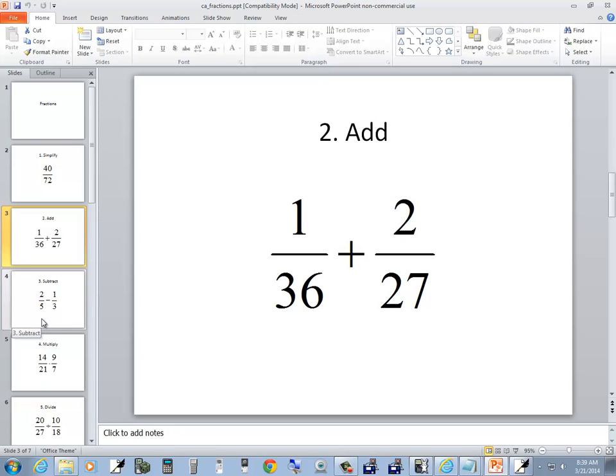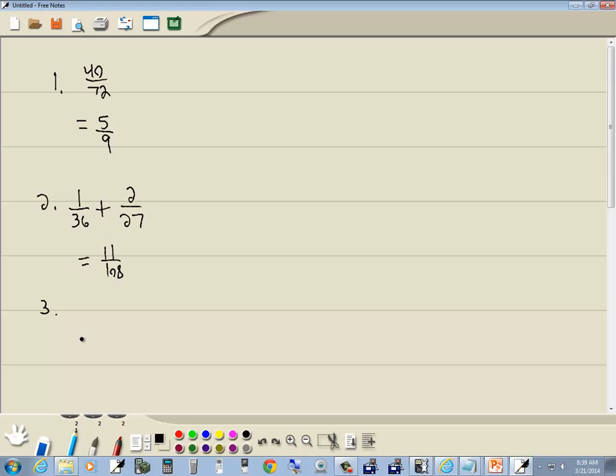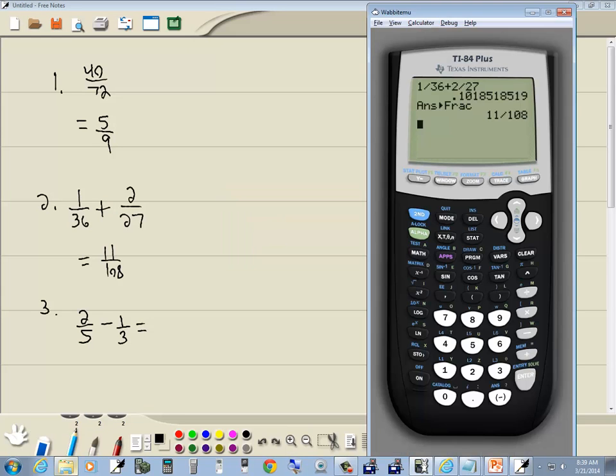A third problem, we're going to subtract fractions. So we got 2 fifths minus 1 third. Again, I'll press clear to clear the screen and we just type in as we see it. So 2 divided by 5 minus 1 divided by 3, enter, and then math, enter, enter, and that gives us 1 fifteenth.